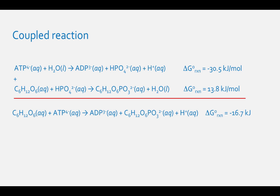Delta-G-0 reaction equals negative 16.7 kilojoules. Since the delta-G-0 reaction is negative, these coupled reactions are spontaneous.